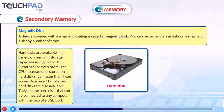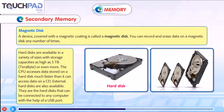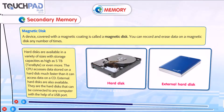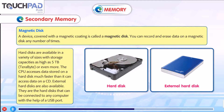External hard disks are also available. Hard disks inside the system are called internal hard disks. External hard disks can be connected to any computer with the help of a USB port. You can see hard disk images on the screen — the internal hard disk in the background of a computer system, and the external hard disk shown in blue, which can be used with any system.